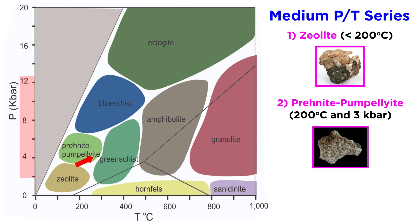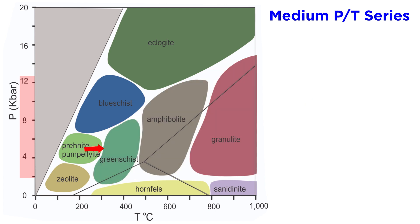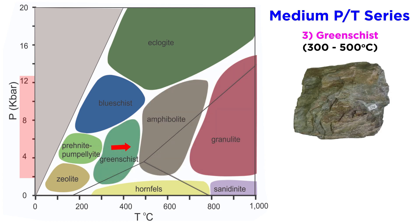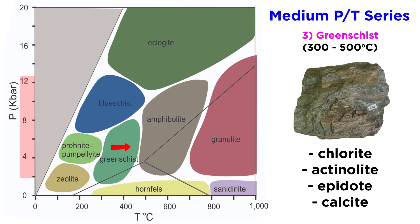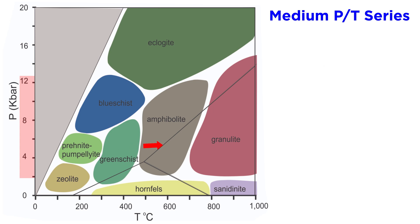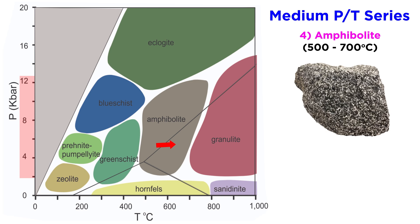From there we move into the prehnite-pumpellyite facies, starting at around 200 degrees Celsius and 3 kilobars. The next three facies probably represent the overwhelming majority of all metamorphic rocks on Earth, as they span a large range of PT conditions. Between 300 and 500 degrees Celsius is the greenschist facies, which gets its name from the green color of the chlorite minerals that crystallize under these conditions. Other common minerals in greenschist rocks are the magnesium-rich amphibole actinolite, epidote, and calcite. Between 500 and 700 degrees Celsius is the amphibolite facies, which is unsurprisingly marked by the formation of amphiboles, especially hornblende, along with the high-pressure mineral garnet.